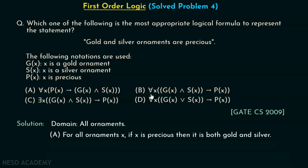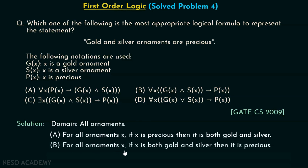Let's try to convert option B: for all x, G(x) and S(x) implies P(x). This can be written as: for all ornaments x, if x is both gold and silver, then it is precious. Here we are saying if x is both gold and silver — meaning an ornament that is simultaneously both. The statement actually means if we have a gold or silver ornament then it is precious, so this option is incorrect.